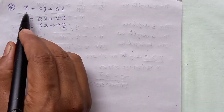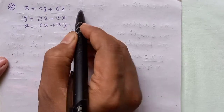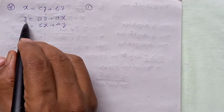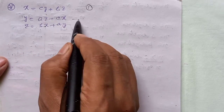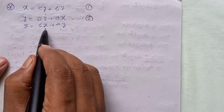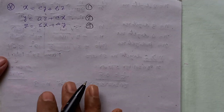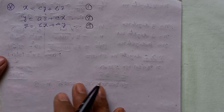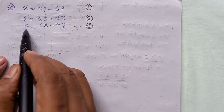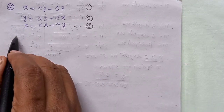So firstly, x equals to cy plus bz — equation 1. And y equals to az plus cx — equation 2. And z equals to bx plus ay — equation 3. We will omit (eliminate) accordingly.